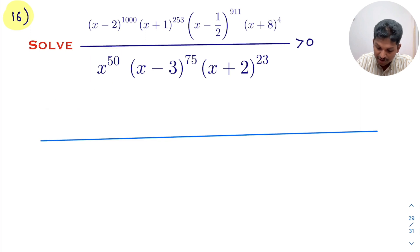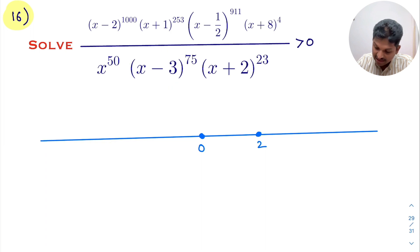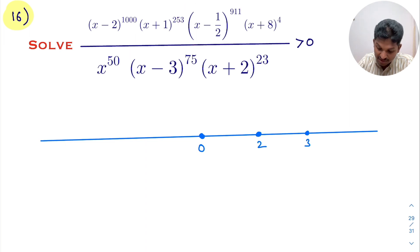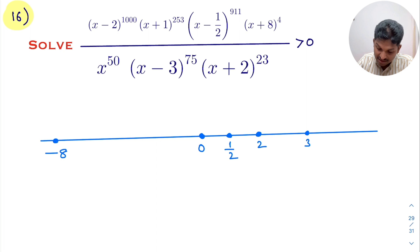Here, x to the power 50 is (x-0)^50. Equating gives x = 0. Equating the next factor gives x = 3. Equating gives x = 1/2. Equating gives x = -8. Equating gives x = -1. Equating gives x = -2. So we get 7 critical values total.